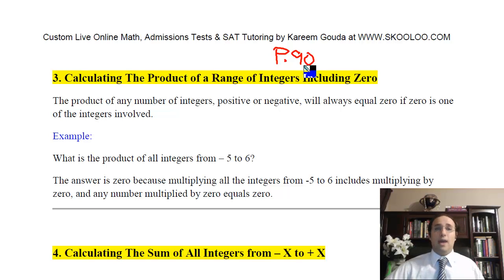So let's take a look at number three, calculating the product of a range of integers, including zero. So a question that would appear on the test as a standalone question or as part of a longer word problem would be something like this example right here. What is the product of all integers from negative 5 to 6?